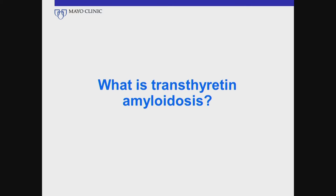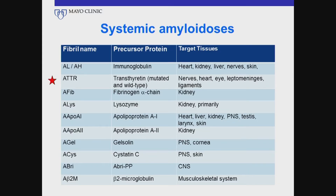So what is transthyretin amyloidosis? There are a number of systemic amyloidoses, and you can see the listing here. Amyloidosis is a disease where there are abnormal proteins that form fibrils and deposit in organs, making the organs sick and making a person sick in turn. We all make various proteins in our bodies, and they typically work well, but sometimes there can be an abnormality where they will basically fold on themselves and then line up into what we call fibers or fibrils and then cause disease in target tissues.